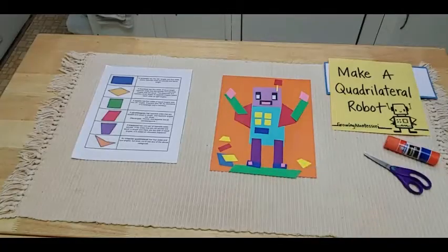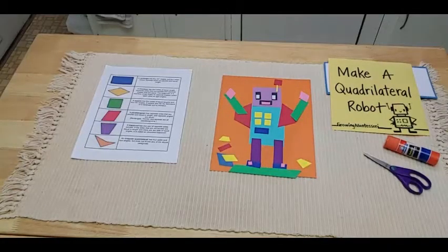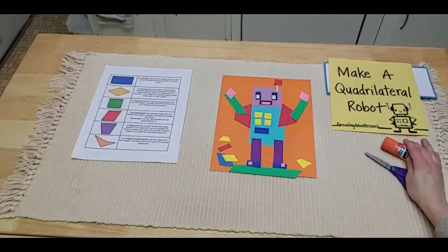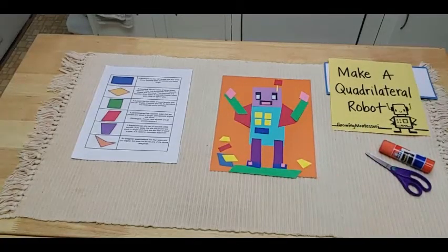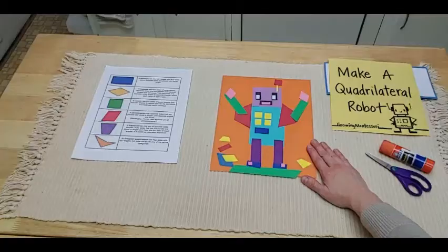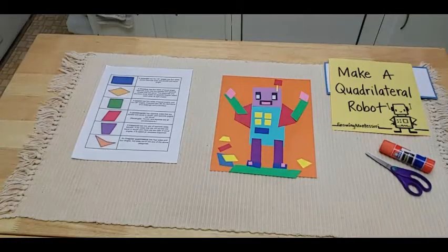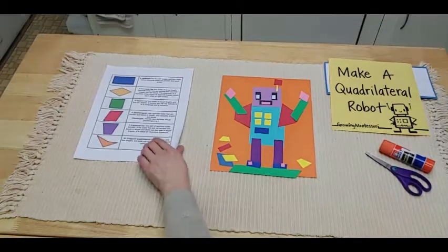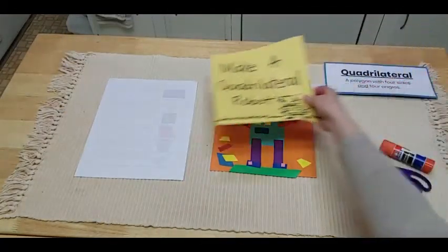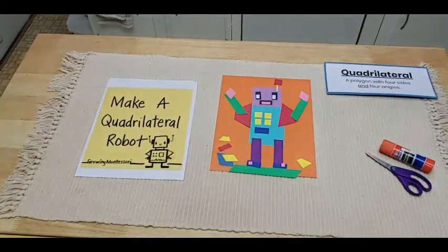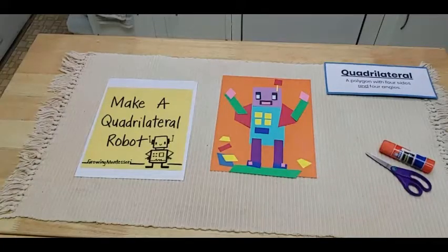Once I have my design situated in the way that I want it, then I'll take my glue stick and glue all the parts down. And then comes the fun part. After you've created your quadrilateral robot, see how many shapes you can name without looking at the sheet. So you could flip the sheet over. Cover it up. No peeking. And then you can take a minute to see if you can remember.